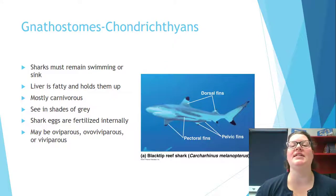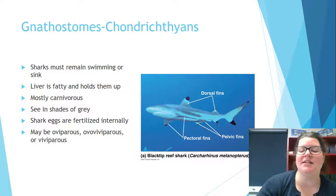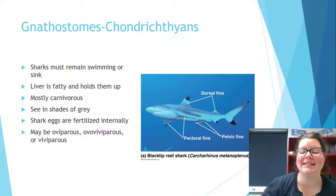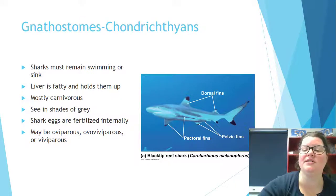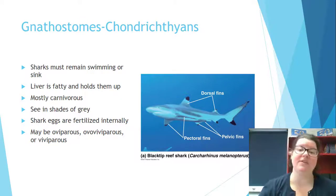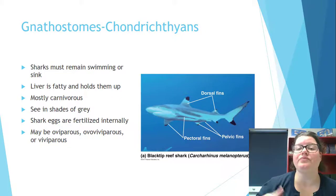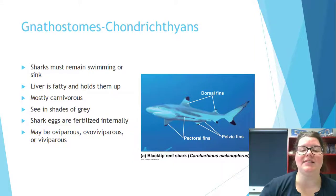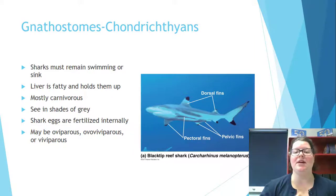Most sharks are carnivorous and see in shades of gray. They have a basic body structure — pectoral fins, dorsal fins, and pelvic fins — very similar to what you find on a bony fish, which you'll see when you dissect your perch.